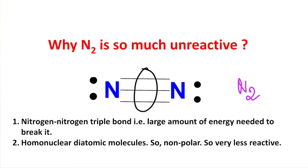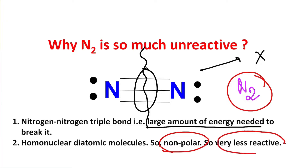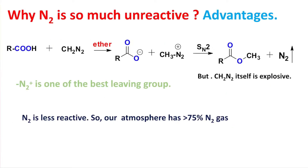Because of that triple bond, if you want to activate nitrogen into something useful, you need to provide a huge amount of energy to break this bond. Additionally, N₂ is a homonuclear diatomic molecule, so it is non-polar. Consequently, bond energy is higher and the molecule is non-polar, making nitrogen very less reactive and difficult to activate.